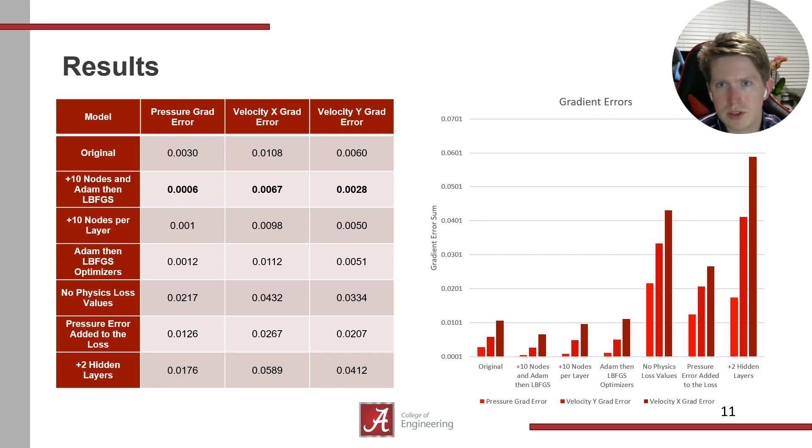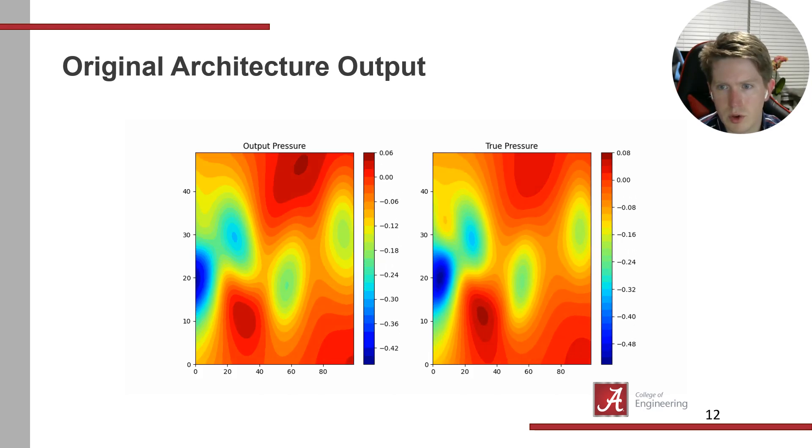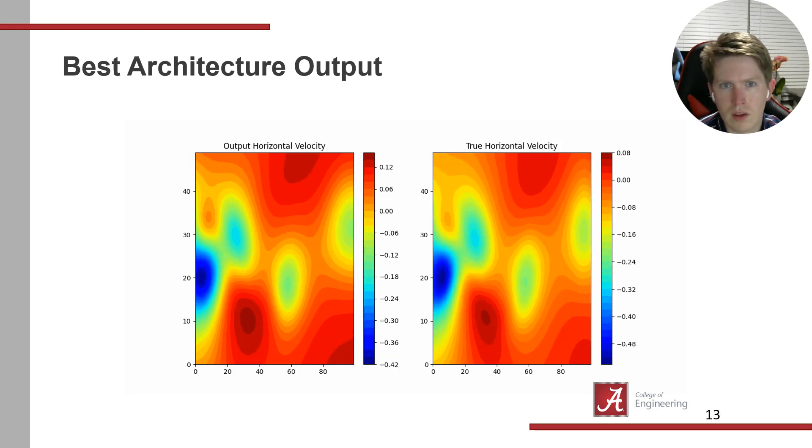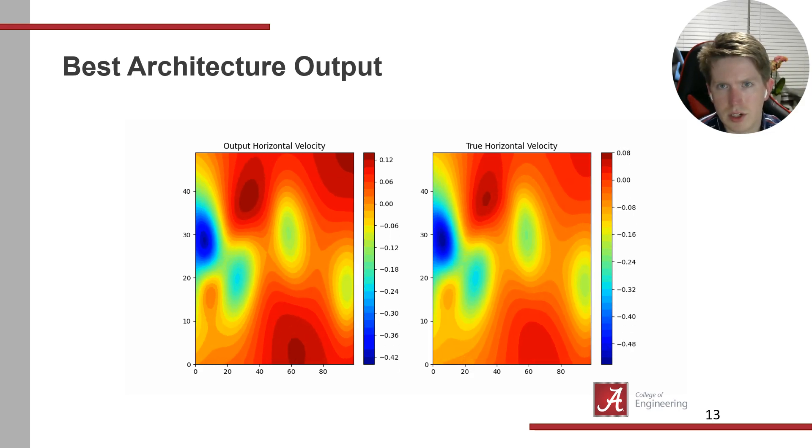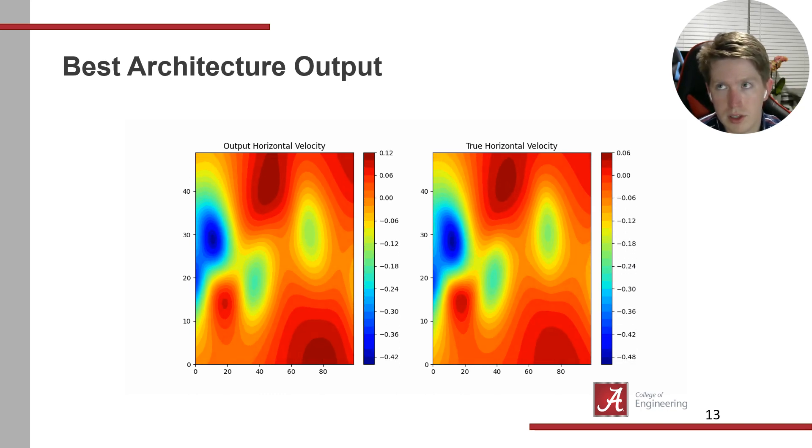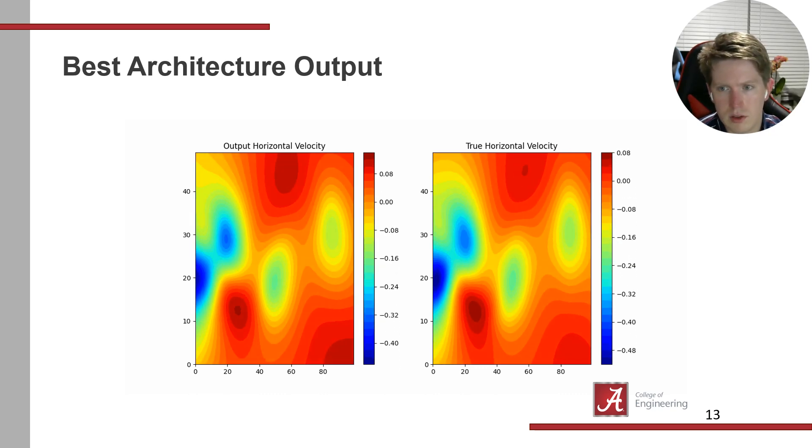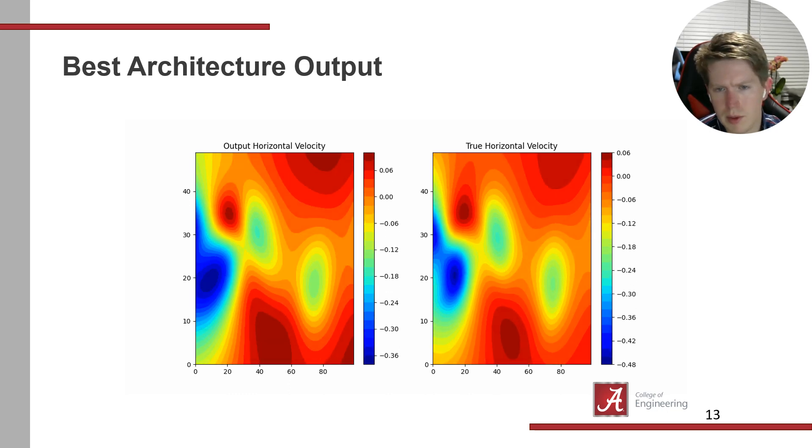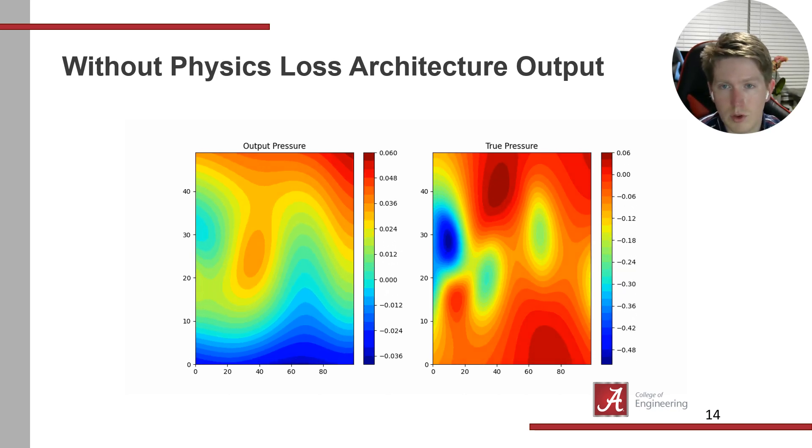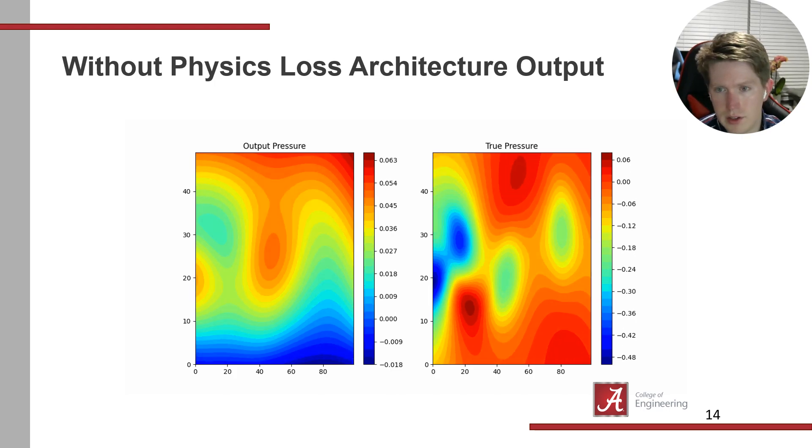Now I'll show you some images. Here's the output from the original architecture. It stays pretty close but isn't perfect—it seems to lag behind a bit. Here's the best architecture output with the 10 nodes added plus Adam then LBFGS optimization. That's by far the best result. It looks significantly better—comparing side by side, you can tell. To show what failure looks like, this is what happens when I remove the physics loss functions. It looks nothing alike and did not do a good job.